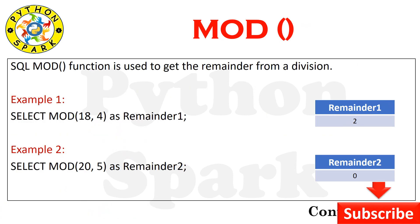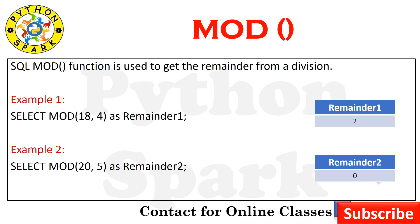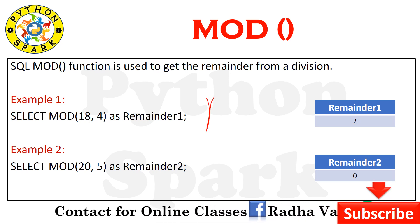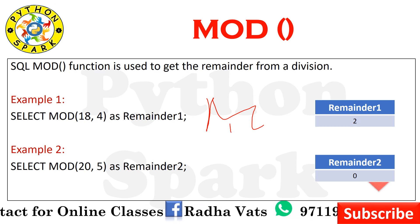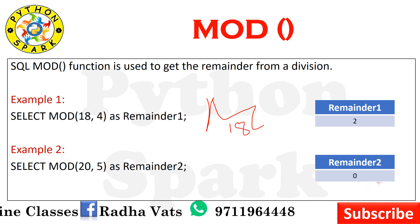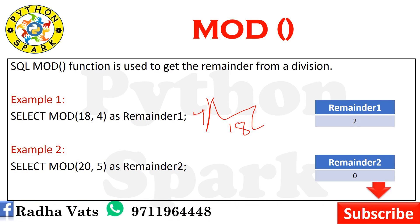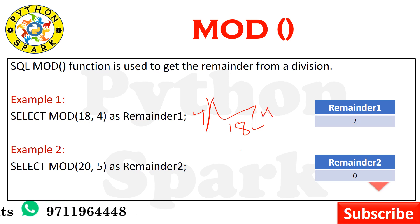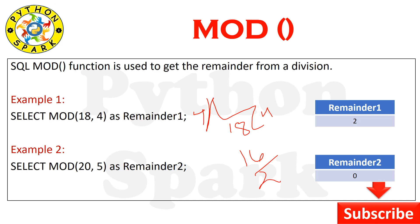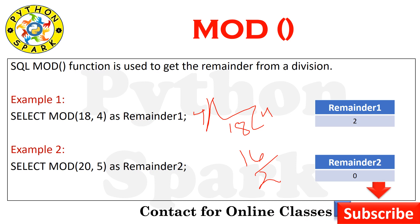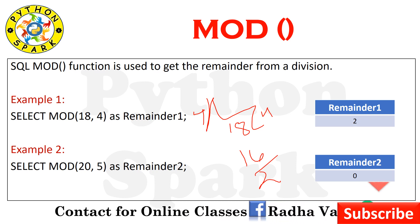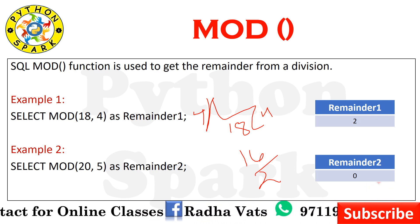The MOD function — what is it? It returns the remainder from a division. For example, if you have 18 and 4: 4 times 4 is 16, and the remainder left is 2. So this is the work of the MOD function — remainder returned after division. We will now see our query.